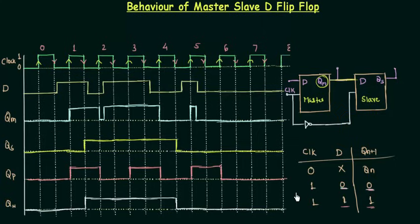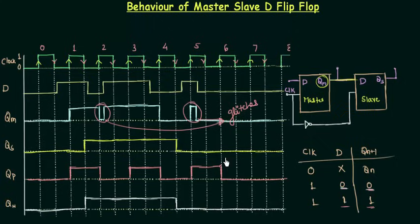Now let's find the important results. The first is about glitches — the sudden changes in the output signal. These are called glitches and they are definitely not desired. You can see that in the slave output the glitches are removed. That is why to remove glitches we use a master-slave flip-flop. Glitches appear because we are changing the input signal when the clock is high — this is not a common practice, and it causes glitches in the output.